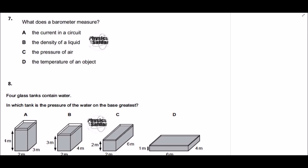Question seven: what does a barometer measure? Reading the options — the current in a circuit, no; the density of a solid, no; the pressure of the atmosphere, yes; the temperature of an object, no. Option C is the correct answer because by definition a barometer is used to measure atmospheric pressure.